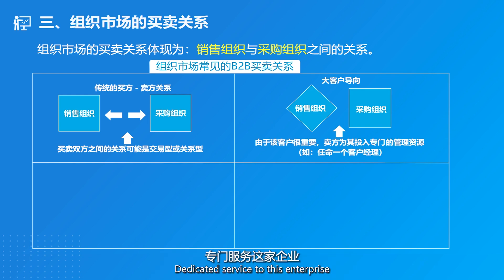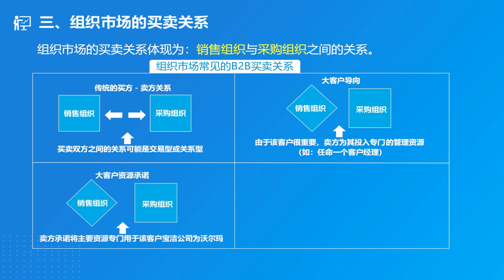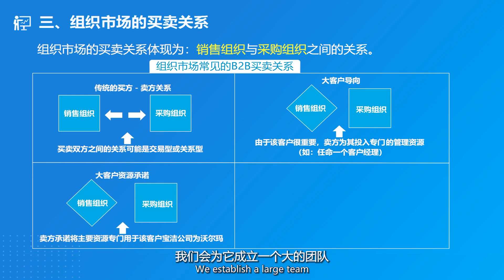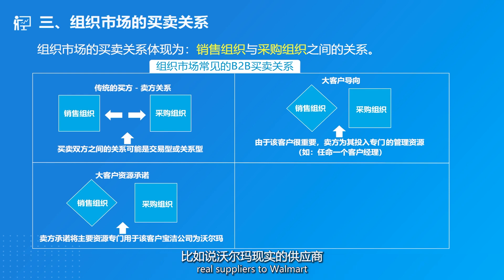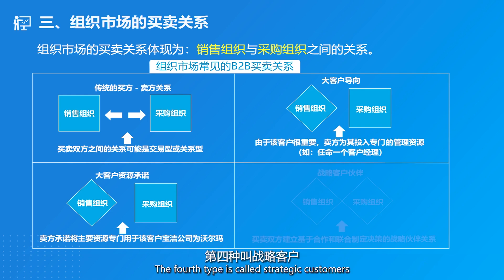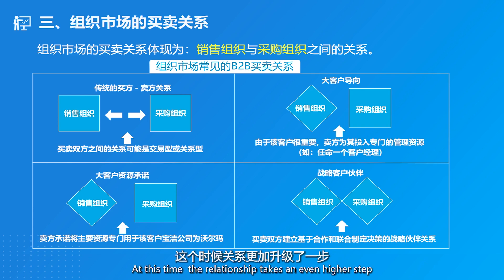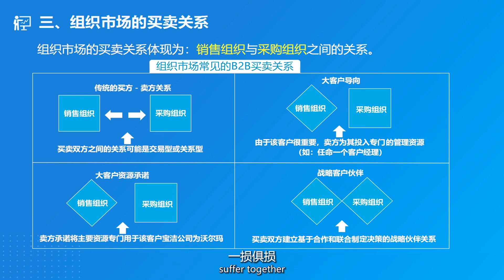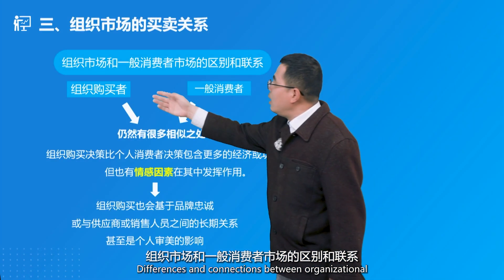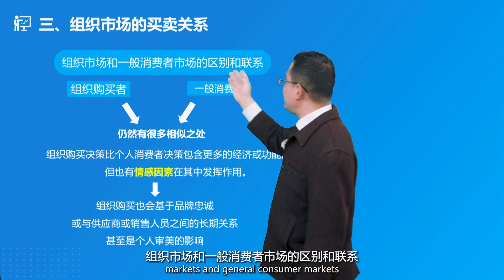The third type is commitment between key accounts. This goes beyond having a customer manager — a large dedicated team is established focused solely on one client. For instance, real suppliers to Walmart would have a dedicated team serving Walmart exclusively. The fourth type is strategic customers, where both parties have formed a symbiotic relationship — prospering together and suffering together — elevating it to a strategic relationship at a higher level.